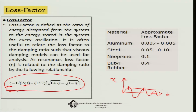Although zeta and Q are not directly material properties, eta is a material property. The more hysteresis there is in the material, the more energy dissipation will occur.